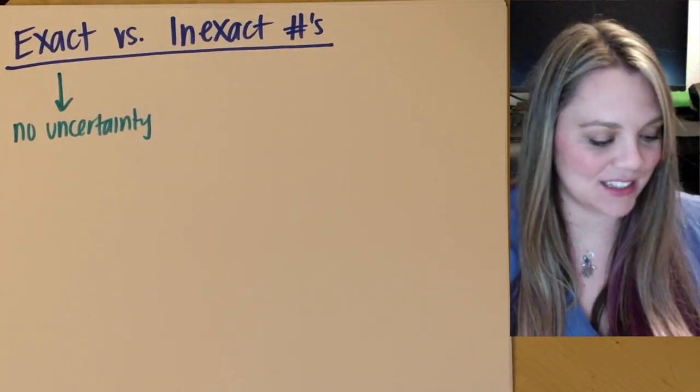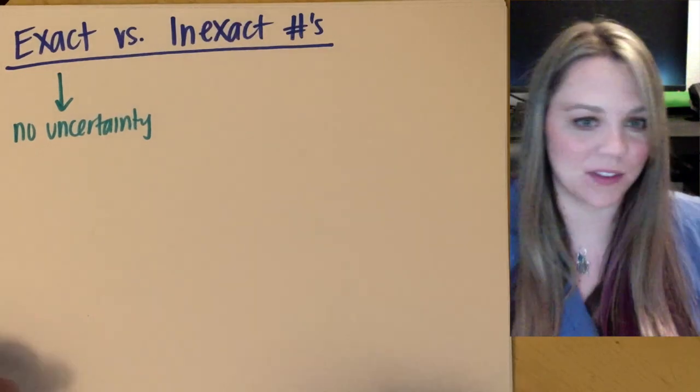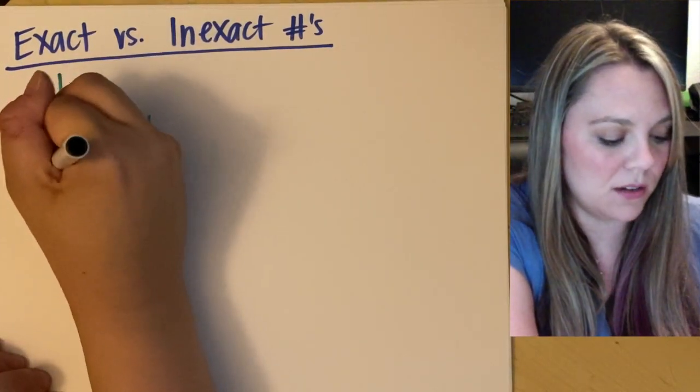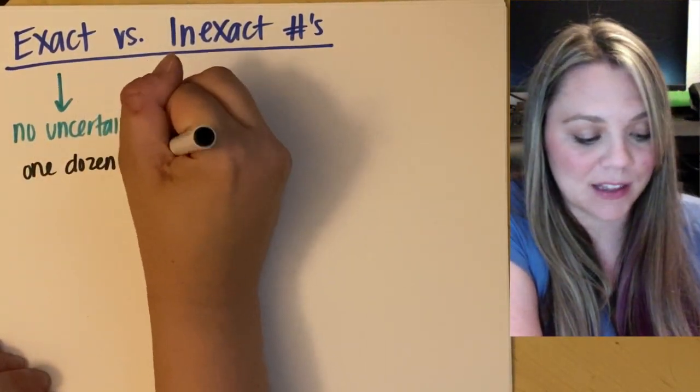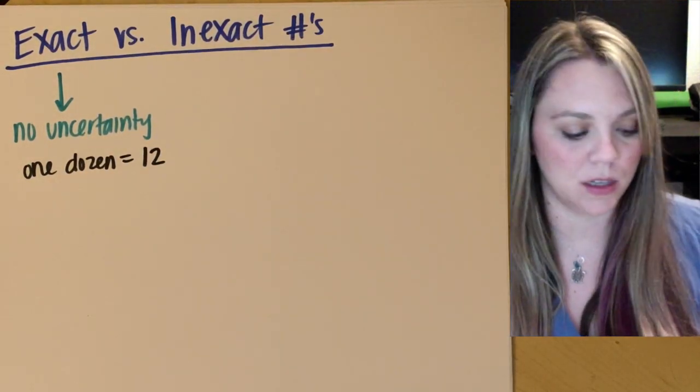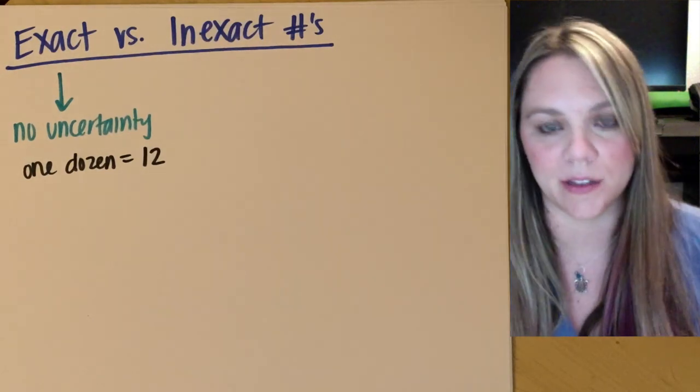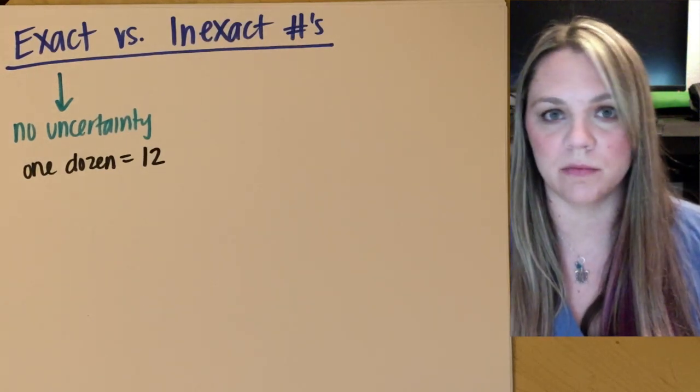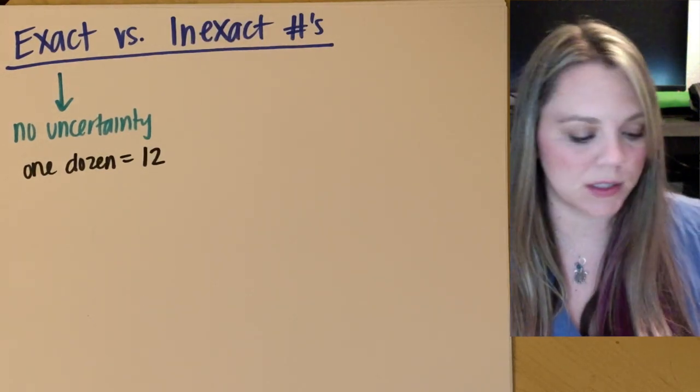All right, the easiest examples that I can think of would be like one dozen is exactly 12. Right, if I went and got a dozen donuts, it would be exactly 12 donuts. It's not 11.99 donuts. It's not 12.012 donuts. It's 12.